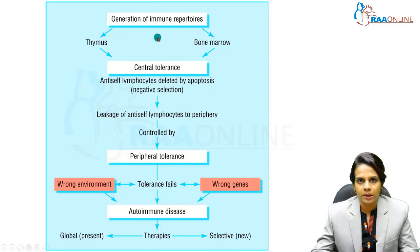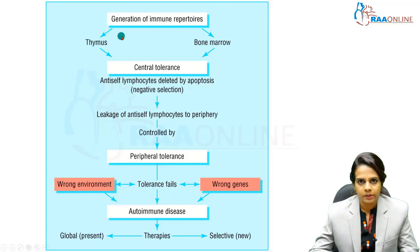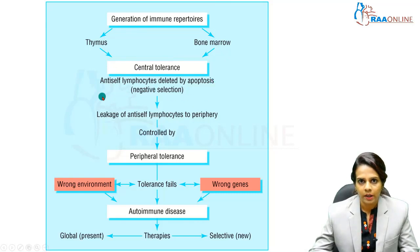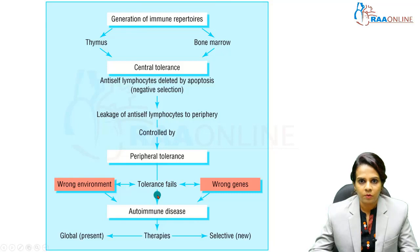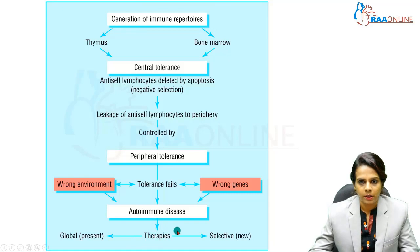Here you can see the generation of immune repertoires. Maturation takes place in T cells and B cells in the thymus and bone marrow. In central tolerance, self-reactive T and B cells get deleted by apoptosis through negative selection. But there occurs some leakage of self-reactive lymphocytes to the periphery, which is controlled by peripheral tolerance. At times the tolerance fails — that may be due to wrong environment or wrong genes — resulting in autoimmune diseases which require further treatment and therapies.